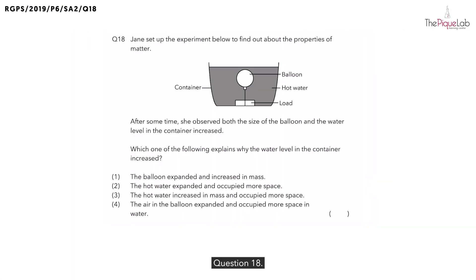Question 18. Jane set up the experiment below to find out about the properties of matter. After some time, she observed both the size of the balloon and the water level in the container increased. And we're supposed to look for the correct explanation for this observation.